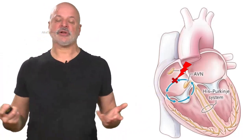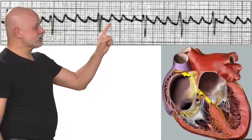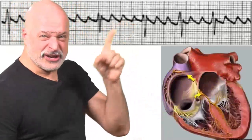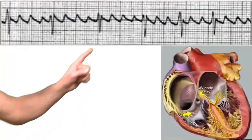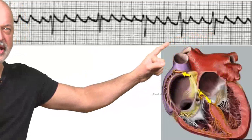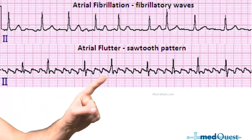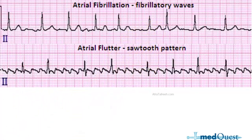If flutter happens to be rarely unstable, you shock it — the instability criteria are the same: chest pain, shortness of breath, hypotension, confusion. Flutter shows a beautiful sawtooth pattern of flutter waves on EKG. In flutter, the R-to-R intervals are regular and the flutter waves are regular. In fibrillation, both the fibrillatory waves and the R-to-R intervals are completely irregular.